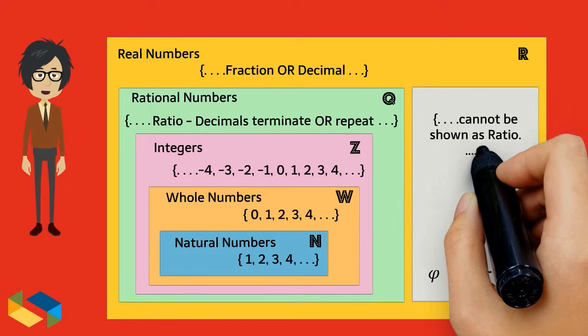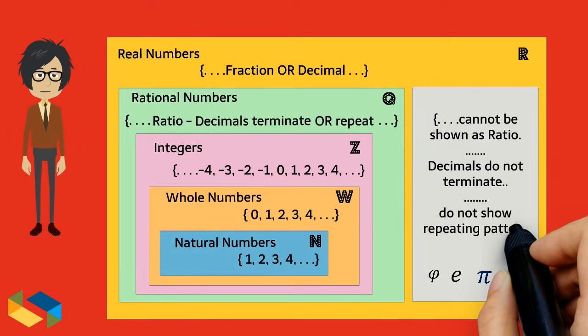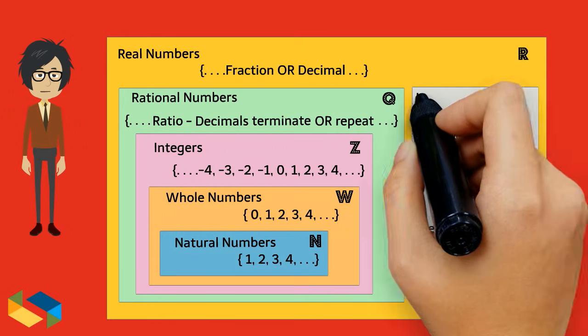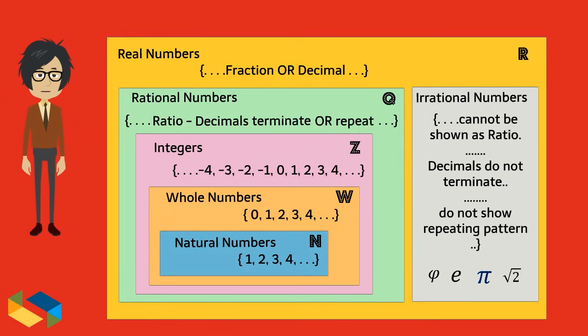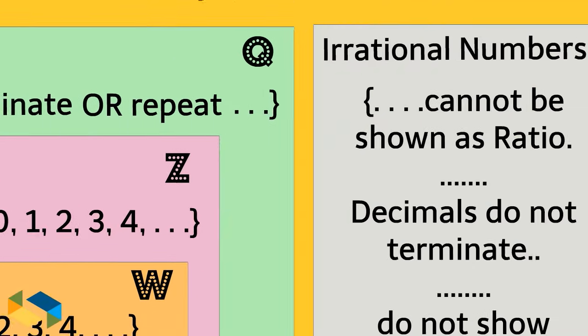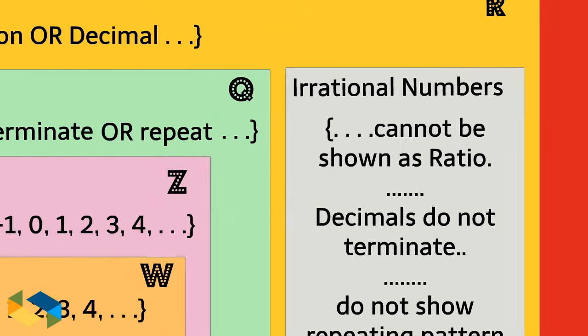So, numbers that cannot be represented as ratio of integers, and where decimals do not terminate, nor show any repeating pattern, are called irrational numbers. Both rational and irrational numbers form real numbers as you can see here.